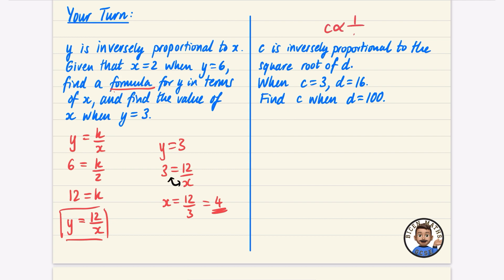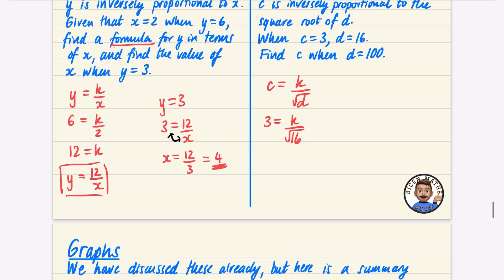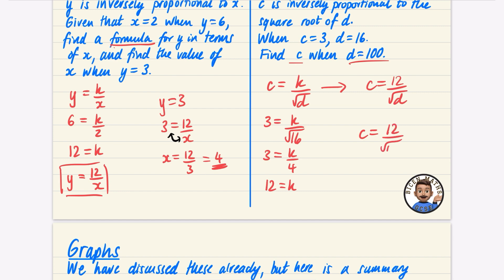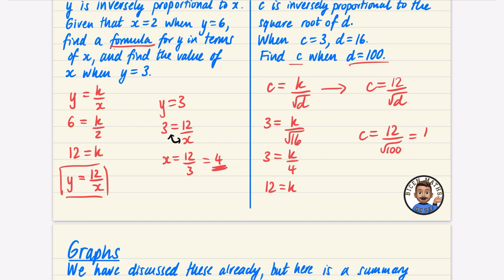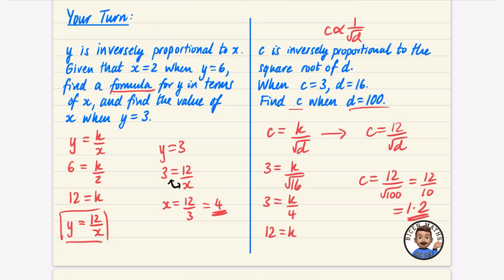Second practice problem: c is inversely proportional to the square root of d, so c = k/√d. When c = 3, d = 16: 3 = k/√16 = k/4, so k = 3 × 4 = 12. The formula is c = 12/√d. To find c when d = 100: c = 12/√100 = 12/10 = 1.2.